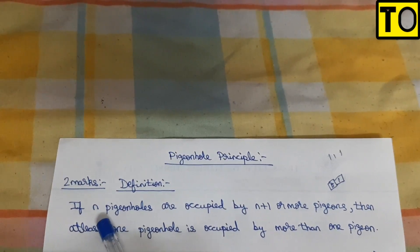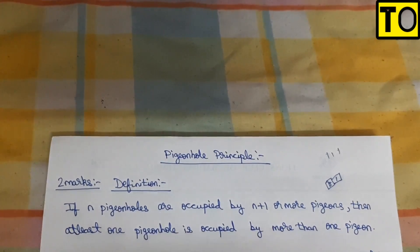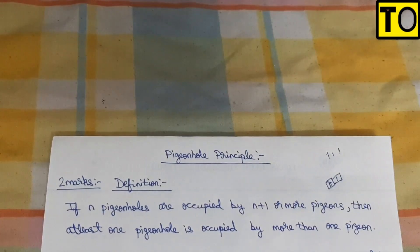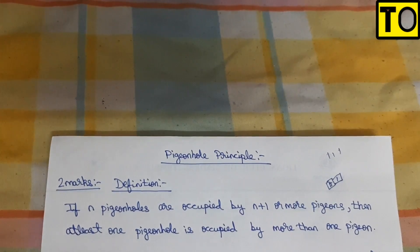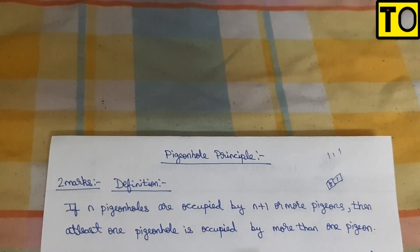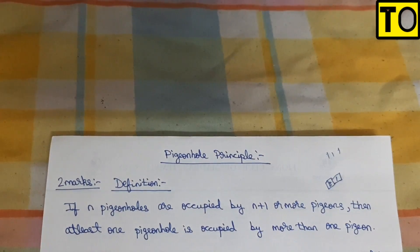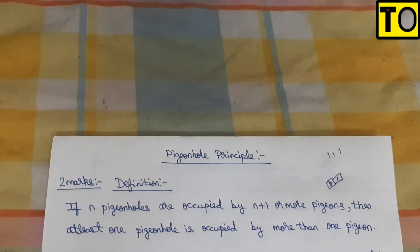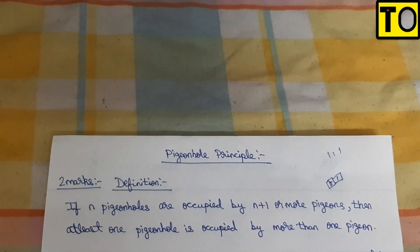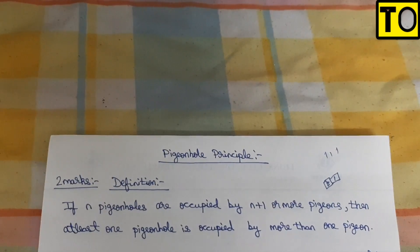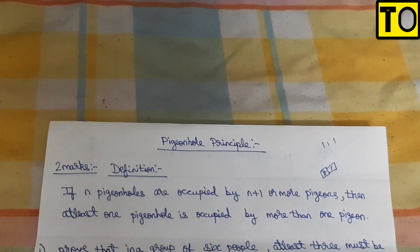If there are n pigeons and n plus 1 — say 2 holes or 4 holes with 5 pigeons — then if there is 1 pigeon hole, there will be extra pigeons. If there are 1 or more pigeons than pigeon holes, at least one hole must contain more than one pigeon. Now let's start with the definition. If there are 2 marks, you can define the Pigeon Hole Principle.